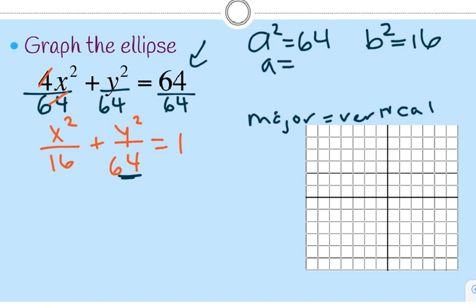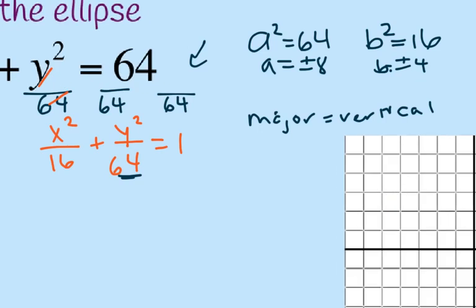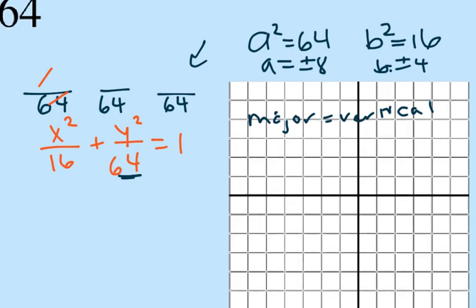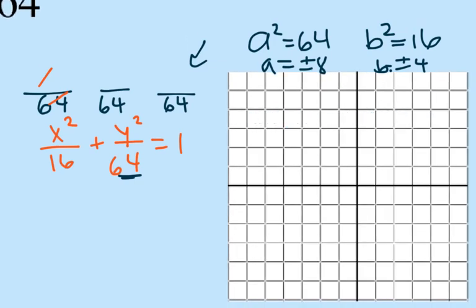I know the major axis is the vertical axis. So a equals plus and minus 8, and b equals plus and minus 4. My center is still (0, 0). Going up 8 and down 8 on the vertical for the major axis, and right 4 and left 4 on the horizontal for the minor axis, I connect my ellipse. The ellipse is taller than it is wide.